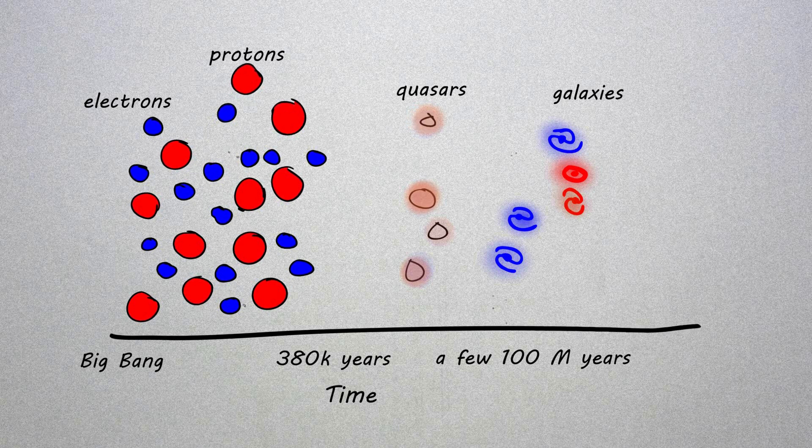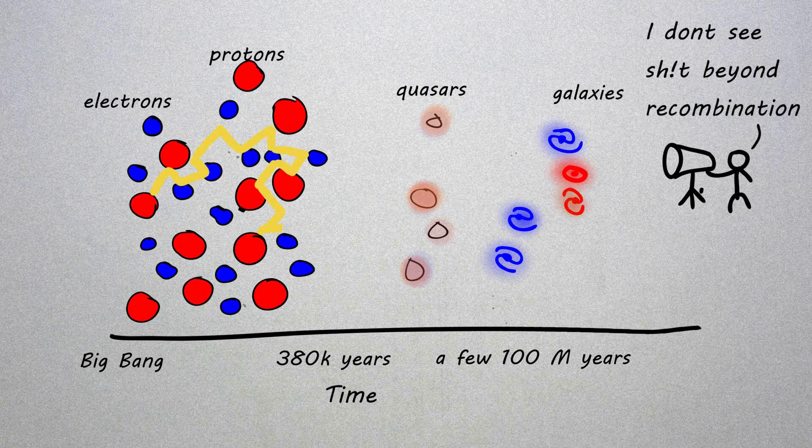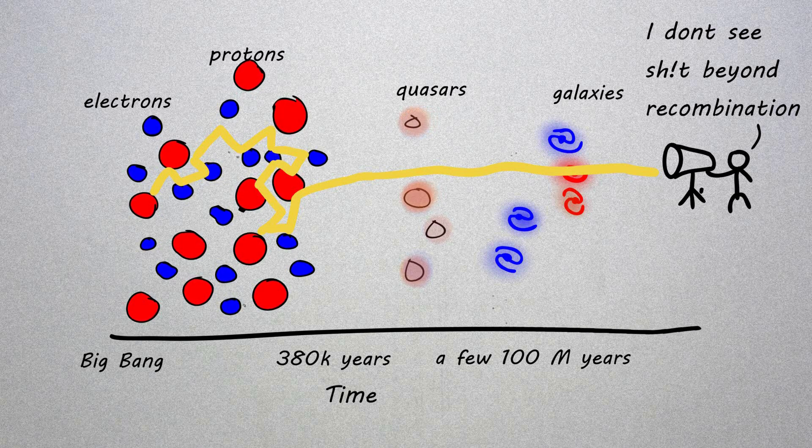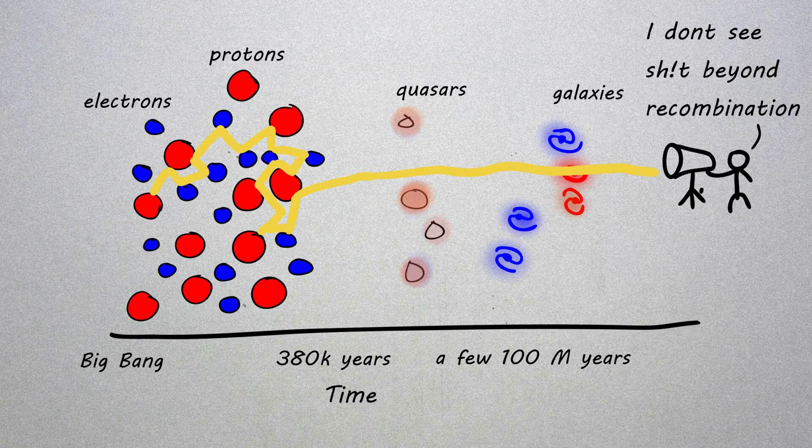This means that the universe when you're looking back at it looks opaque. You can't see into it because the photons haven't been able to get you yet. They are still kind of trapped in that plasma soup. Now as the universe cools down a number of things happens.